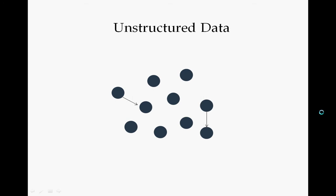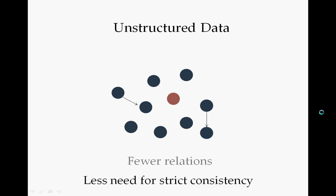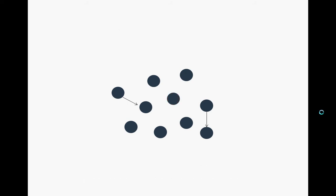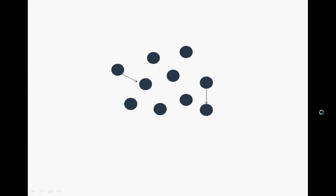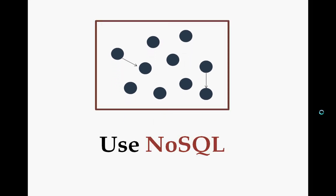However, for unstructured data — for example, the graph representing the friendship relationship in a social networking application — there are fewer strict relationships between users in a very large graph. More especially, there is less need for maintaining strict consistency all the time, as we discussed in the previous example of the friendship request between Joe and Mary. So in this case, NoSQL will be a good candidate for managing such data.